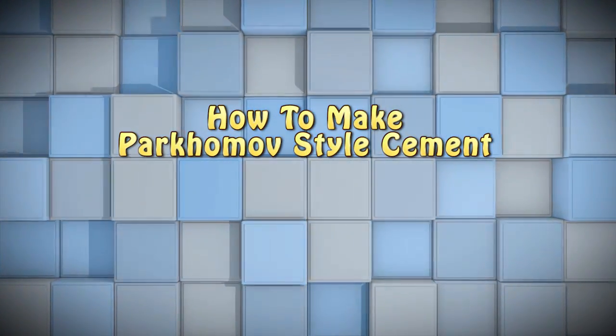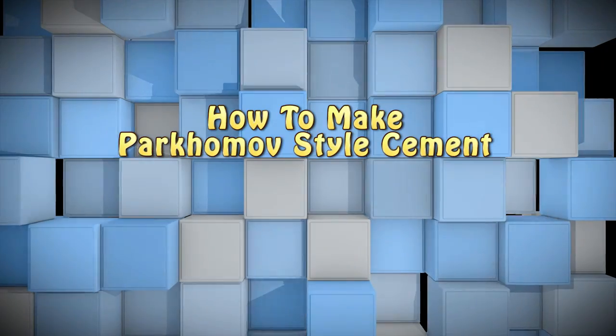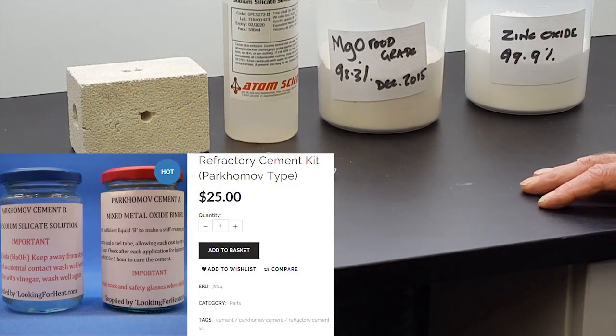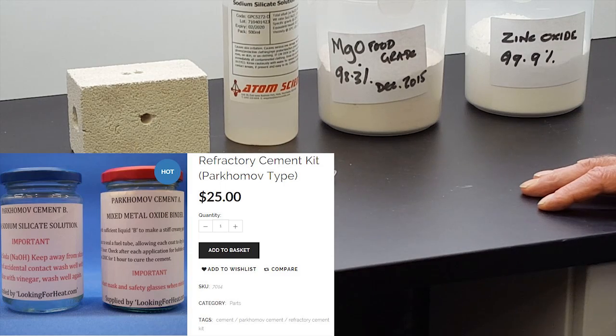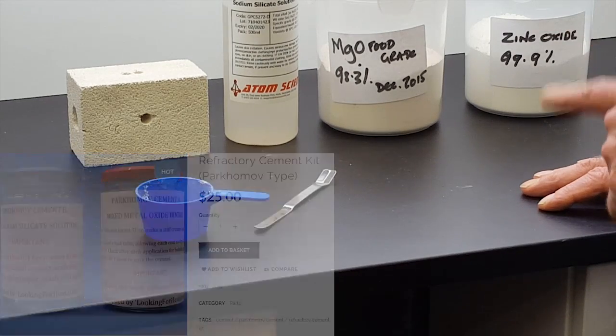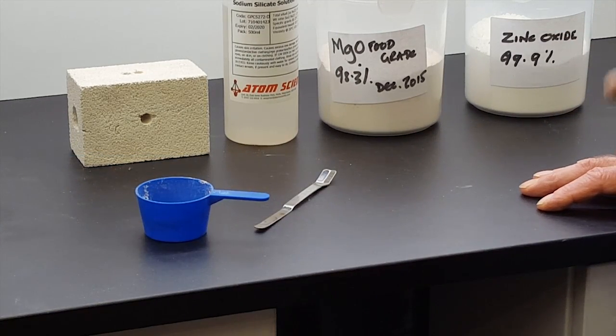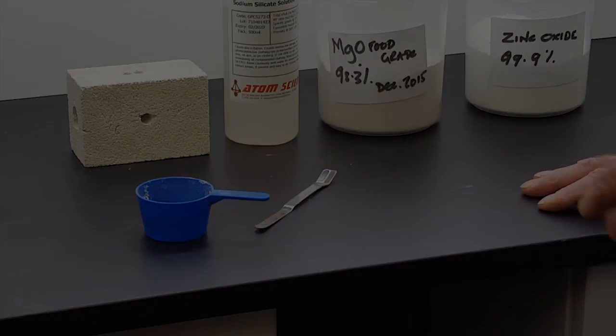Hi, I'm going to show you how to make parkamorph-style high temperature cement. It's not quite the classic parkamorph cement because I'm using magnesium oxide and zinc oxide. Classic parkamorph uses magnesium oxide and aluminum oxide, but I find that zinc oxide is stickier and tends not to crack quite so much.